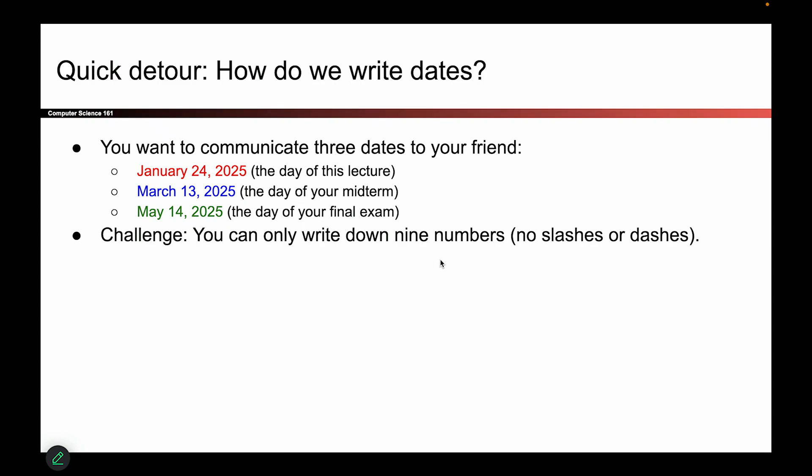So let's say there are three dates, and you want to communicate them to your friend, so you want to communicate to your friend today's date, the date of your midterm, the date of your final exam, but you need to do so only by writing down numbers. So you can't write the word January. That's not allowed. So one question is, how do you tell your friend these dates? Like, what numbers do you send to your friend?